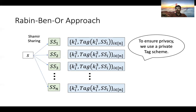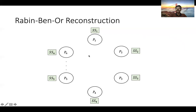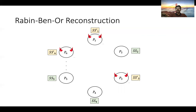Let's see how we prove robustness and explain the reconstruction procedure. In the Rabin–Ben-Or construction, reconstruction involves a single round of communication. Each party broadcasts its Shamir share to every other party. Note that the parties do not broadcast the key–tag pairs — these are private and known only to that party. We consider an adversary who can corrupt up to T parties; since we consider a malicious adversary, the broadcasted share of corrupted parties could differ from the share given by the dealer.